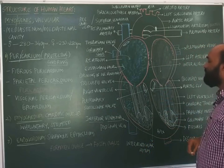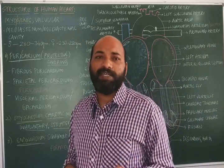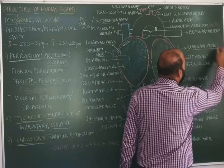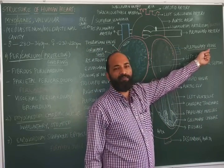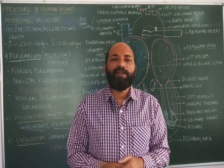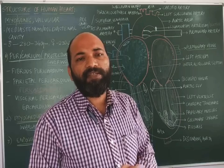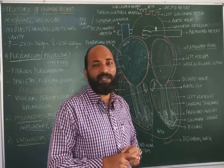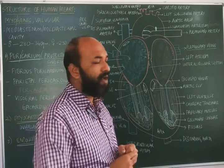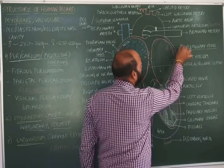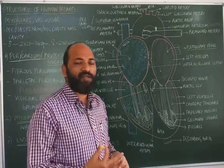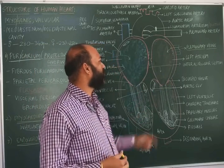The left atrium receives oxygenated blood directly from the lungs through veins called pulmonary veins, which come from the lungs to the heart. Pulmonary veins are the only veins in the body that carry oxygenated blood, since all other veins carry deoxygenated blood.